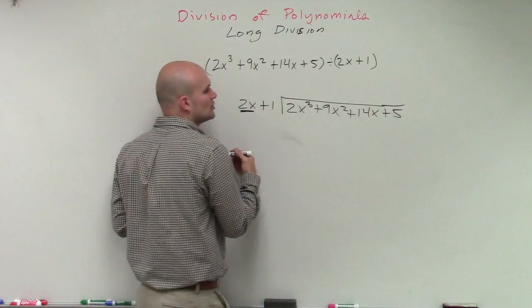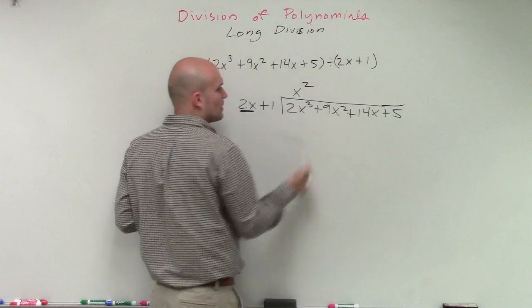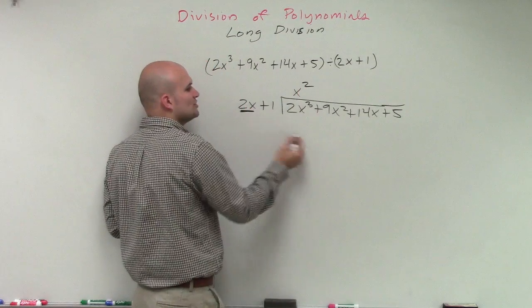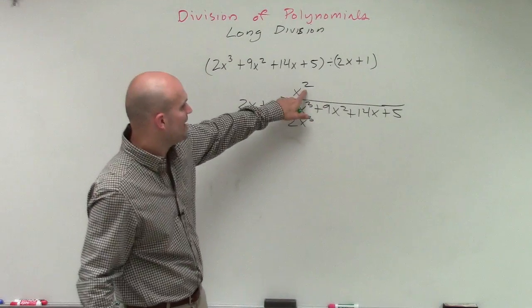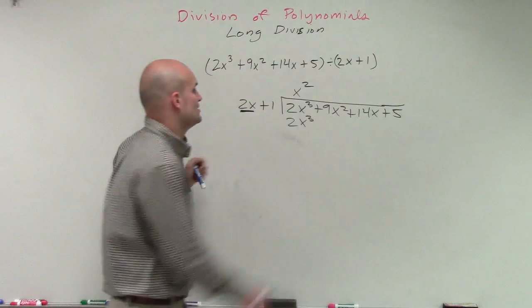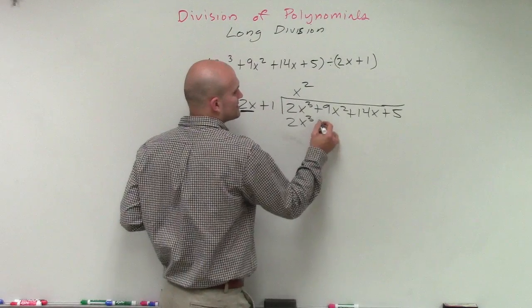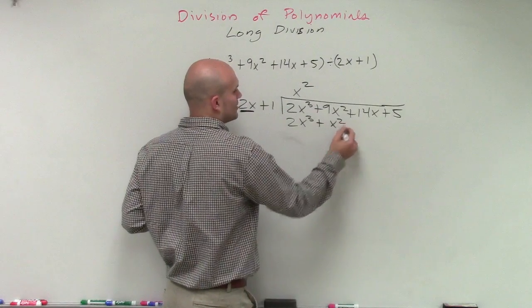2x divides into 2x cubed x squared times. x squared times 2x is 2x cubed. Now we need to make sure we remember we multiply this quotient by both terms of our divisor. So x squared times 1 is going to leave us with an x squared term.